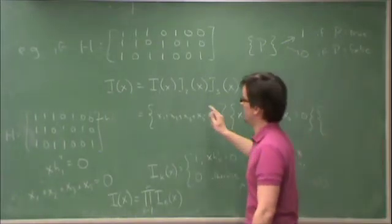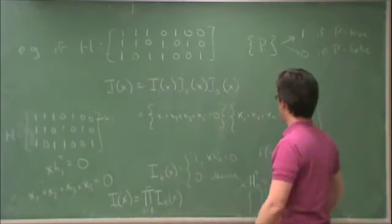Times i3, which requires x1, x3, x4, and x7 sum together to be 0.